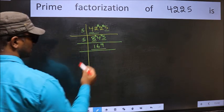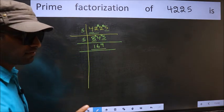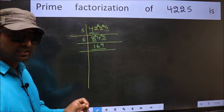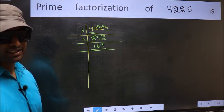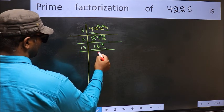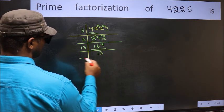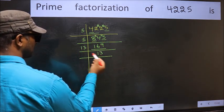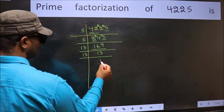Now we have 169. Always remember, 13 into 13 is 169. That is, 13 times 13 is 169. Now we have 13. 13 is a prime number, so 13 once is 13.